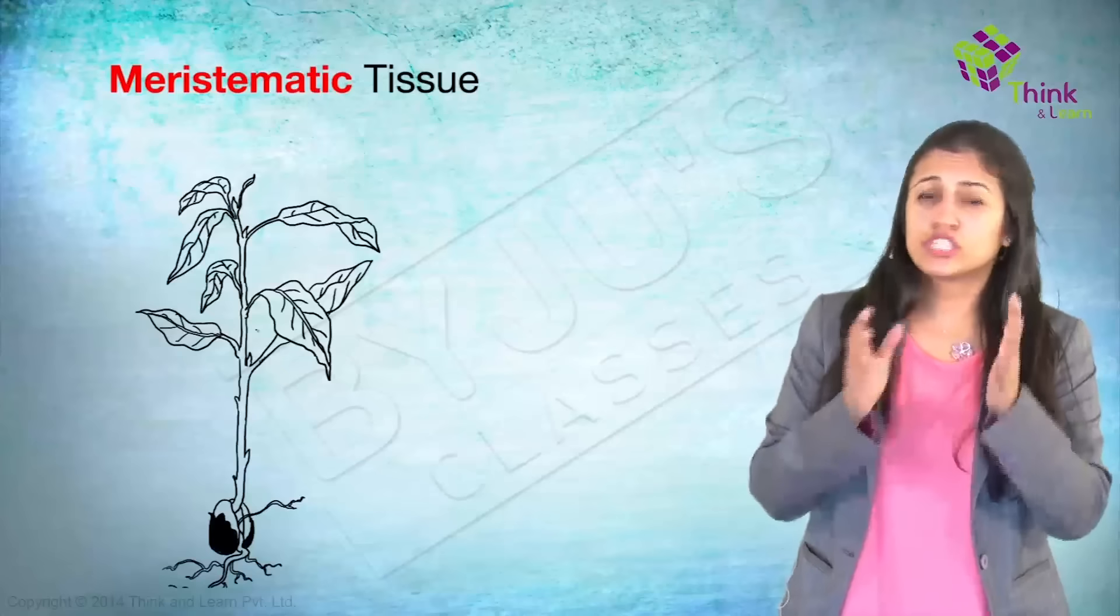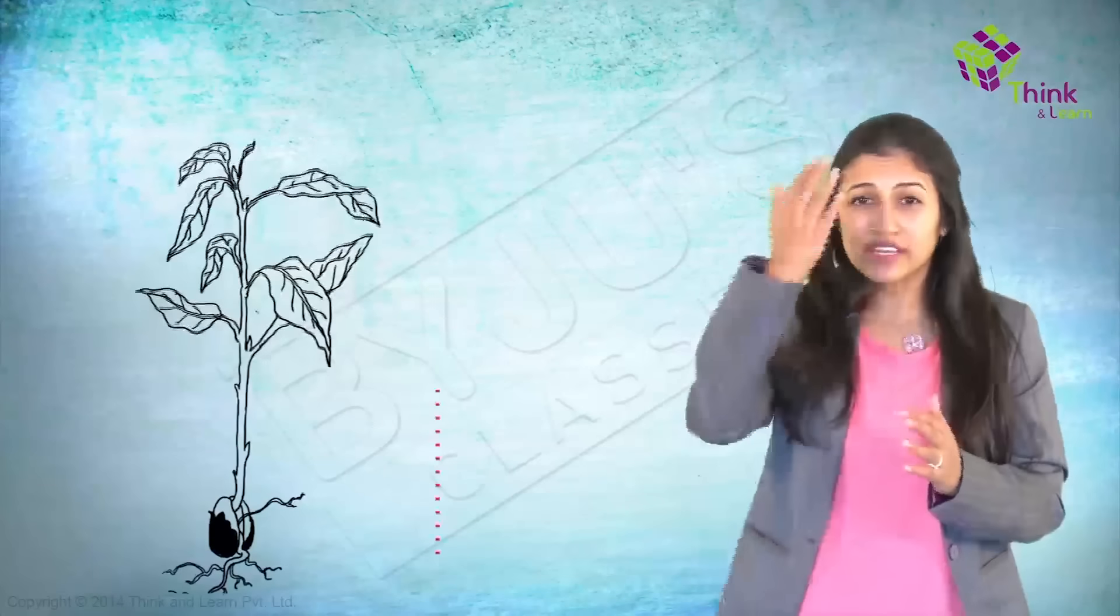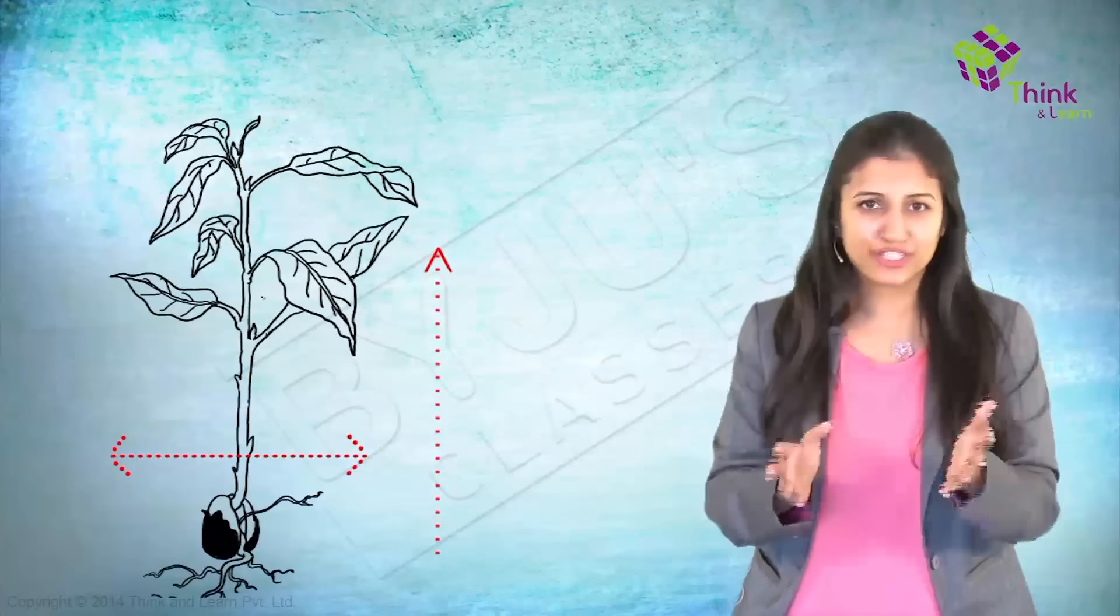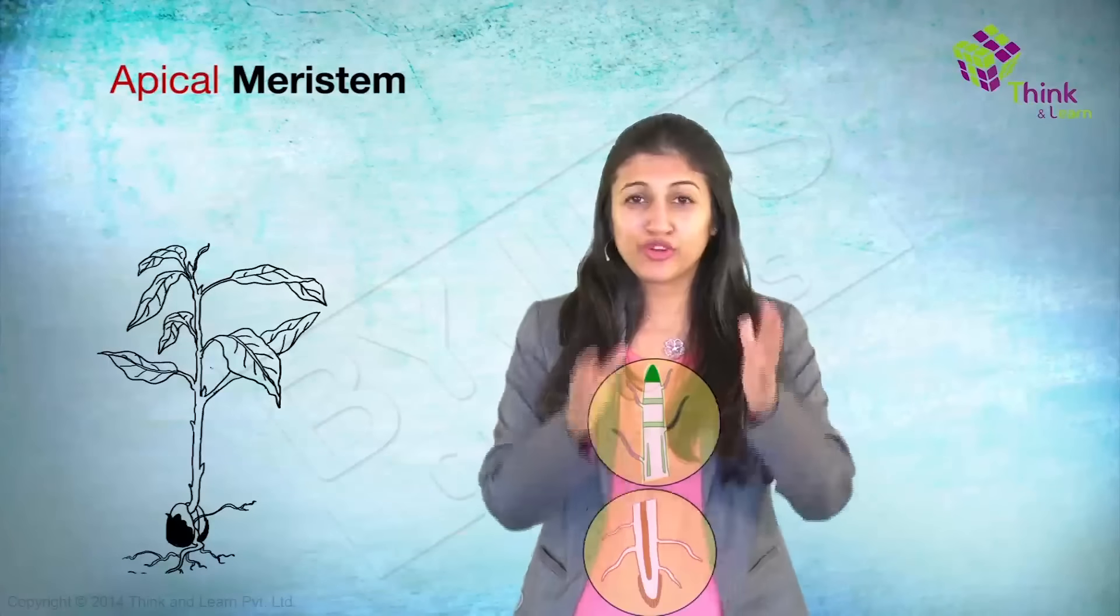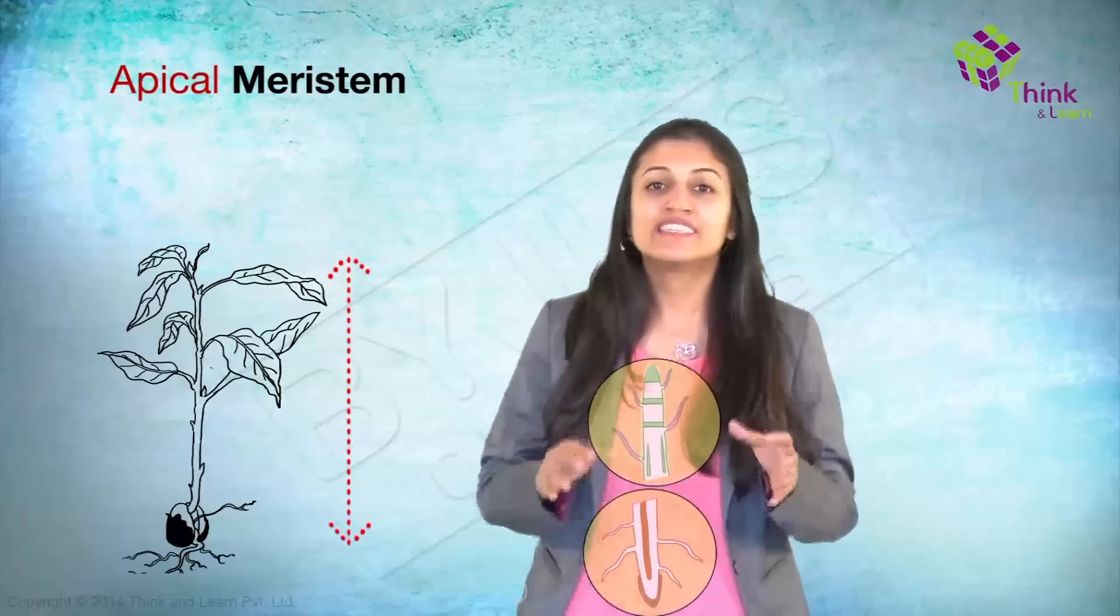So the meristematic tissue is responsible for growth and as you would have guessed, growth can be either vertical or horizontal. So we have different tissues responsible for each of them. Meristematic tissue type number one, the apical meristem, usually present in the tips of the shoots and the roots and responsible for unilateral growth. What's that? Growth in one direction and makes the plant shoot up or shoot down as the case may be.